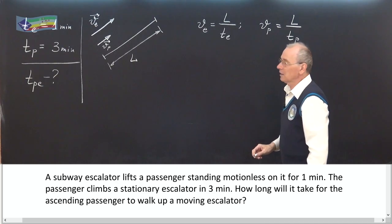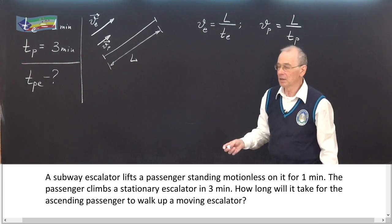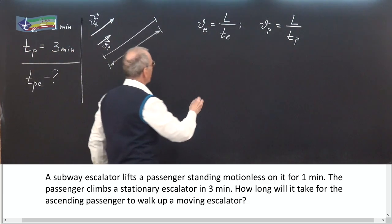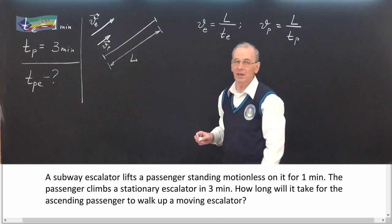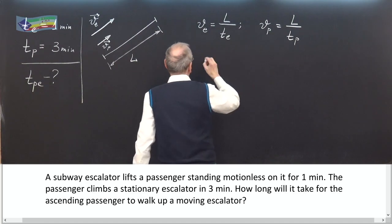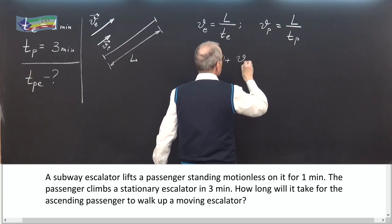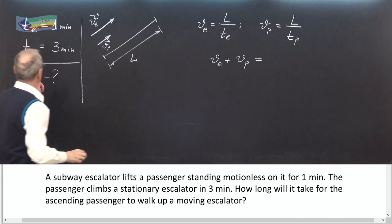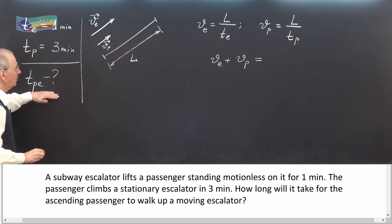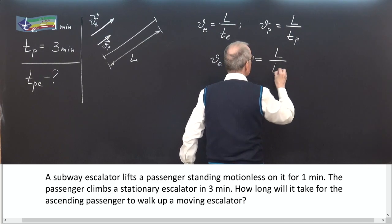And at last, if both passenger and escalator work, these two speeds are adding because both velocities are directed upward. And we can write V escalator plus V passenger gives us the length of the escalator divided by unknown TPE. L divided by TPE.